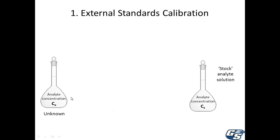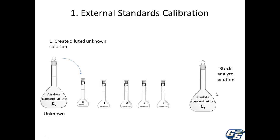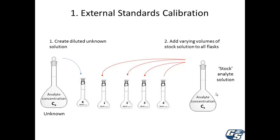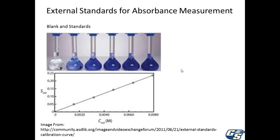For the external standards method, say you have an analyte in solution at some unknown concentration X. For the analysis, you make up a stock solution of the analyte at a known concentration, as accurately and precisely as possible. You have a set of flasks: into one flask you put only the unknown, and into the other flasks you put variable amounts of that stock solution. The unknown and stock solution are not mixed — they're kept separate. Fill them to the total volume and analyze. Let's look at some example data.